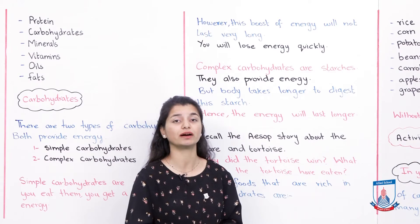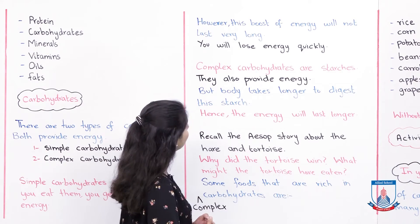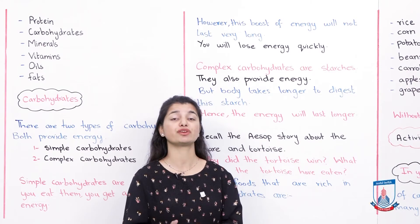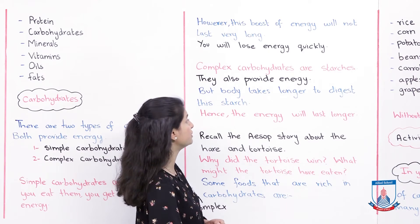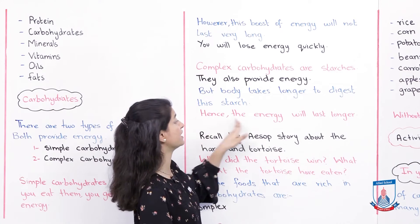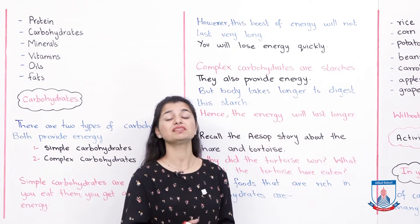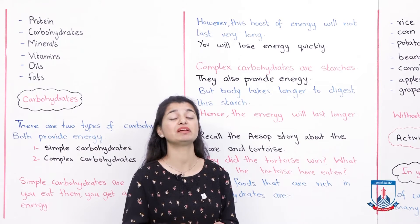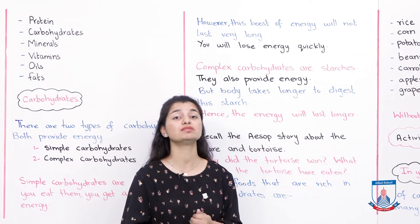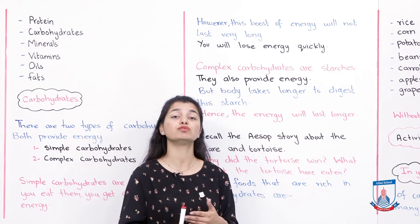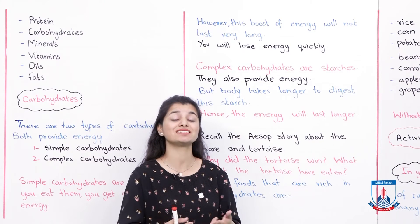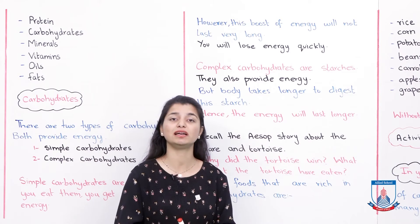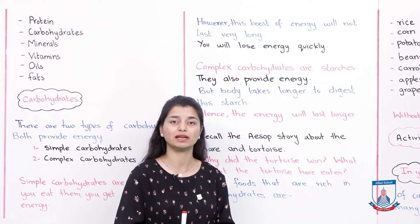So, what are simple carbohydrates? Sugars. And complex carbohydrates are starches. They also provide energy, but the body takes longer to digest the starch. Hence, the energy will last longer. Because complex carbohydrates are starch and not sugar, the body takes longer to digest them. And because it takes longer, the energy from complex carbohydrates will last for a much longer time.